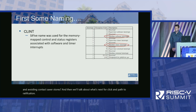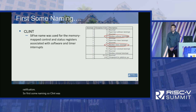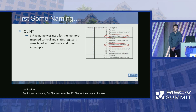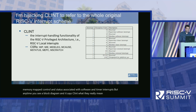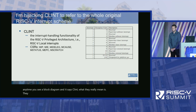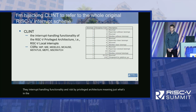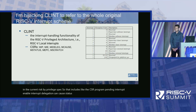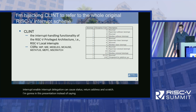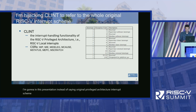First, some naming. CLINT was used by SiFive as their name for where they have their memory-mapped control and status associated with software and timer interrupts. But anytime you see a block diagram that says CLINT, what they really mean is the interrupt handling functionality of the RISC-V privileged architecture — just what's in the current RISC-V privileged spec. That includes the CSRs for interrupt pending, interrupt enable, interrupt delegation, cause, status, return address, and scratch. In this presentation, instead of saying 'original privileged architecture interrupt scheme,' I'm just going to say CLINT.